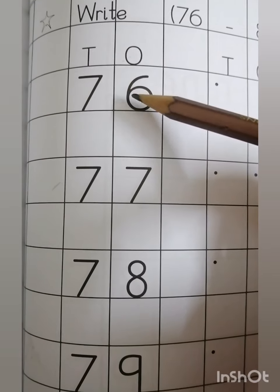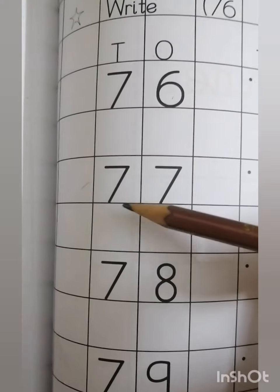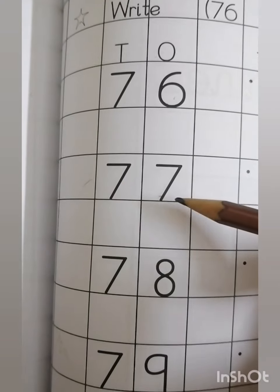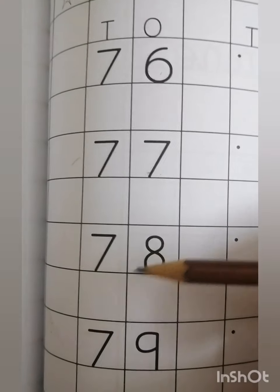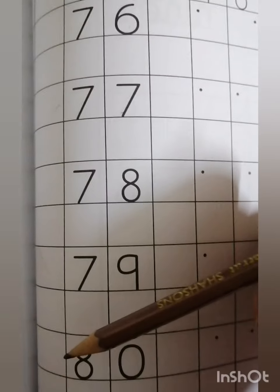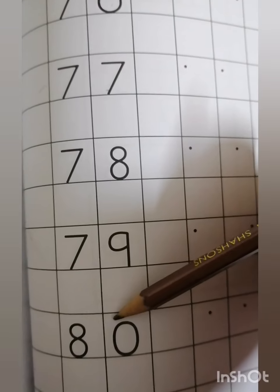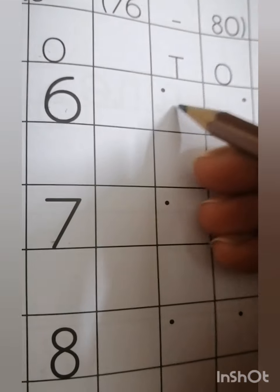76. 7 and 6 makes 76. 7 and 7 makes 77. 7 and 8 makes 78. 7 and 9 makes 79. 8 and 0 makes 80. Now we start practice. We write 7.